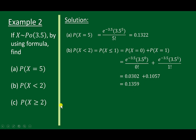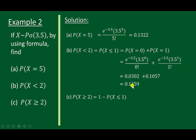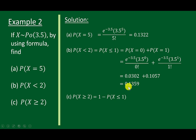For question c, probability x greater than 2. It's impossible to sum directly because we do not have n. We know that the probability for all values of x is 1, so we minus the excluded values 0 and 1: that is 1 minus P(X ≤ 1). Taking the answer from question b, 1 minus 0.1359 gives a final answer of 0.8641.